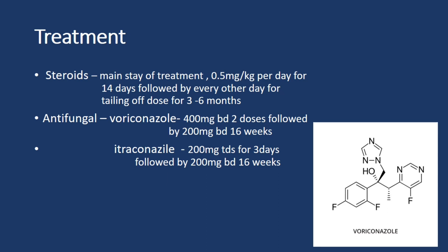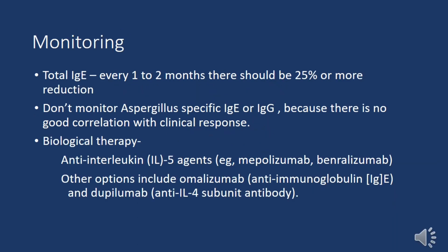Treatment for ABPA: steroids are the cornerstone, with a recommended dosage of 0.5 mg/kg/day for 14 days, followed by a tapering regimen on alternate days for three to six months. Antifungal therapy is also prescribed — voriconazole at 400 mg twice daily for two doses, then 200 mg twice daily for 16 weeks; or itraconazole at 200 mg three times daily for three days, then 200 mg twice daily for 16 weeks.